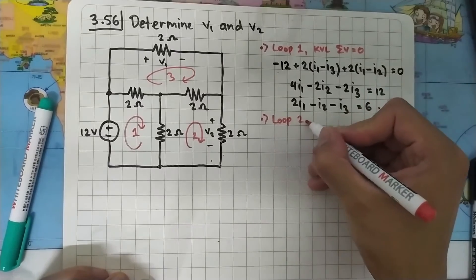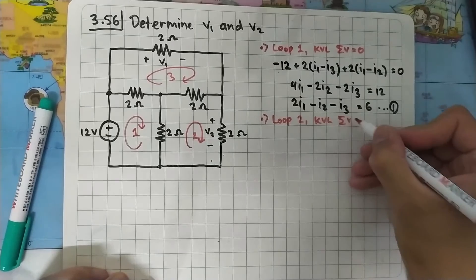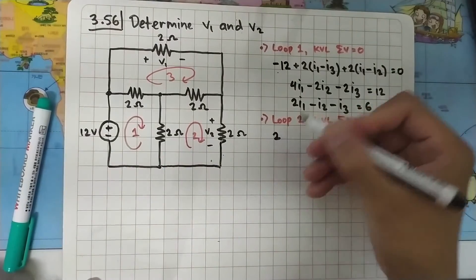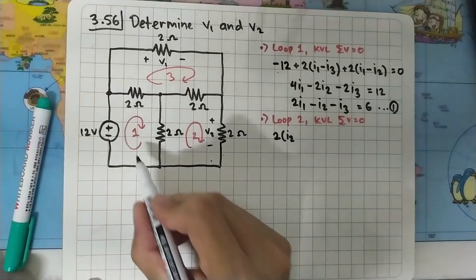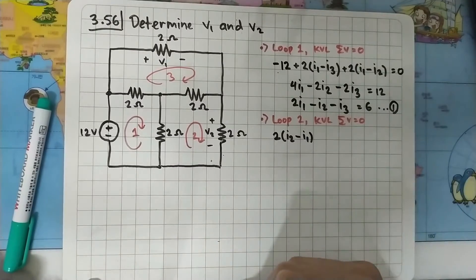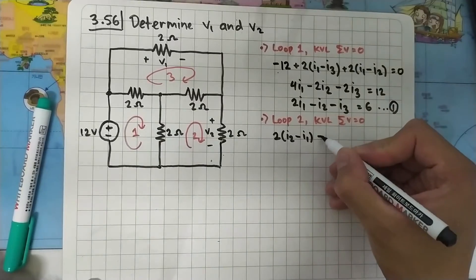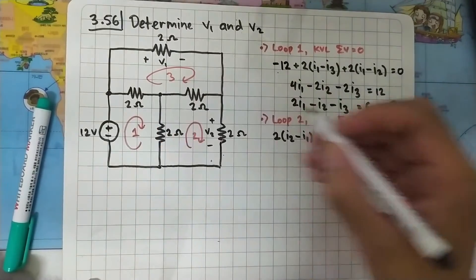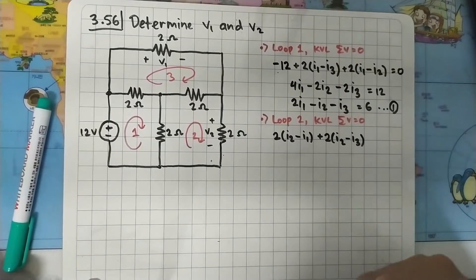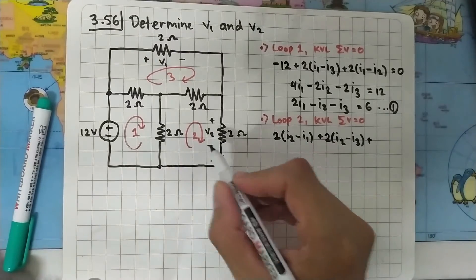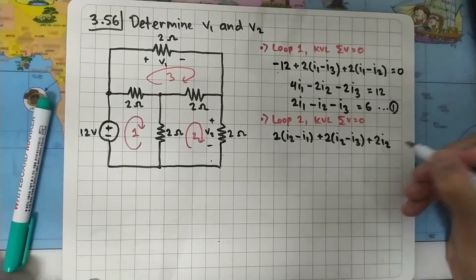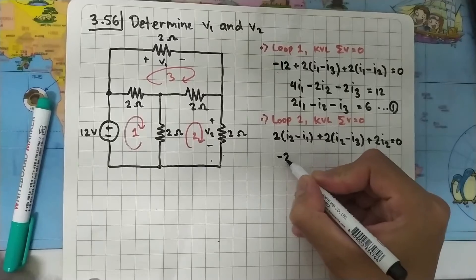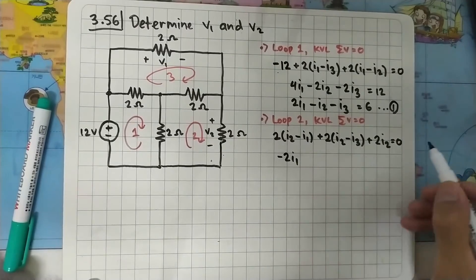Moving on to loop 2, using KVL where the sum of voltages equals zero. Starting from the 2-ohm resistor, the focus is I2, but I1 is flowing in the opposite direction so we subtract I1. Next is a 2-ohm resistor where I2 is the focus but I3 is opposite, so we subtract I3. The last 2-ohm resistor has only I2 passing through it, so we multiply by I2 only. This gives: -2I1 + 6I2 - 2I3 = 0.